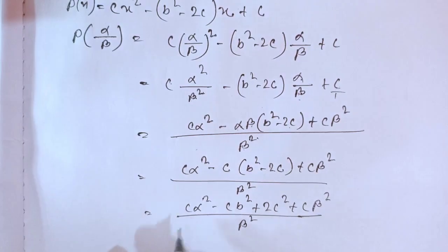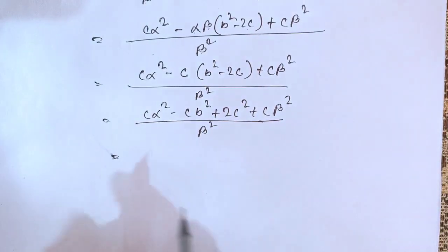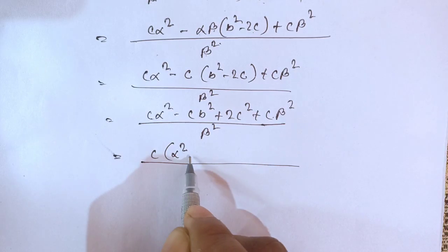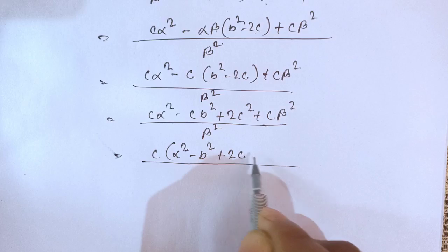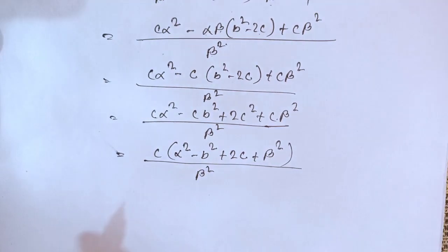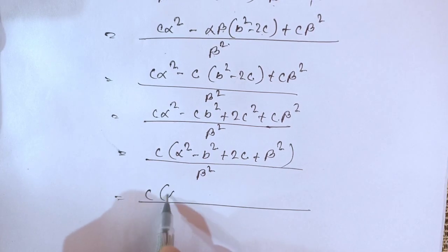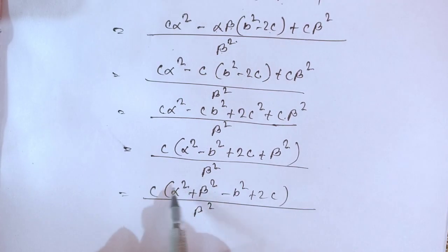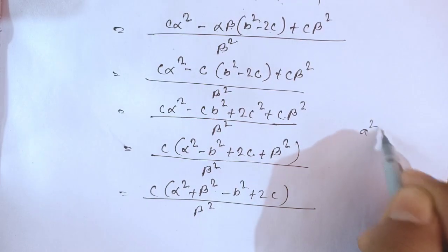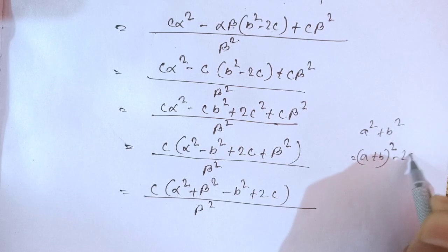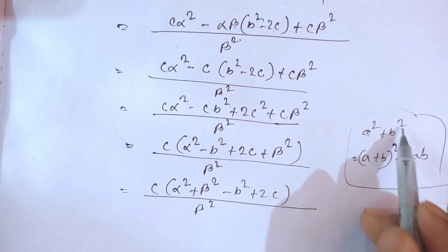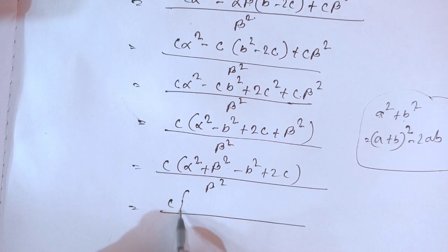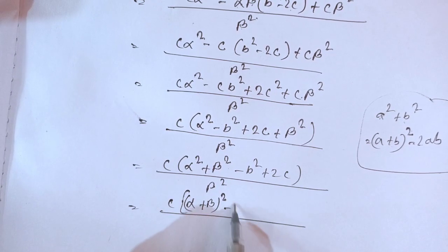Now, α² + β² can be written as (α + β)² - 2αβ. Substituting this: [c((α + β)² - 2αβ + 2αβ)]/β². The -2αβ and +2αβ cancel, leaving [c(α + β)²]/β².